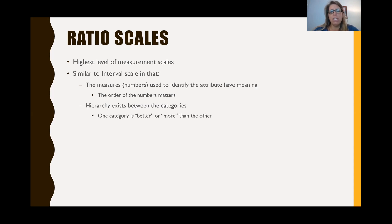There's also a hierarchy that exists between the categories where one category is better or more than the other category. With ratio scales, the categories have equal groupings. Each category has an equivalent interval. The difference between 1 and 2 is the same as the difference between 2 and 3 and the difference between 3 and 4.